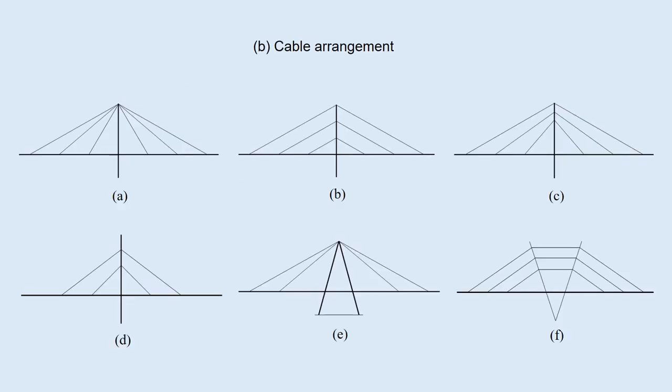Cable arrangement. There are a wide variety of choices on the cable arrangement. The radial type A effectively resists the vertical loads, but the cables are anchored at one position of the tower, which is the disadvantage for construction.